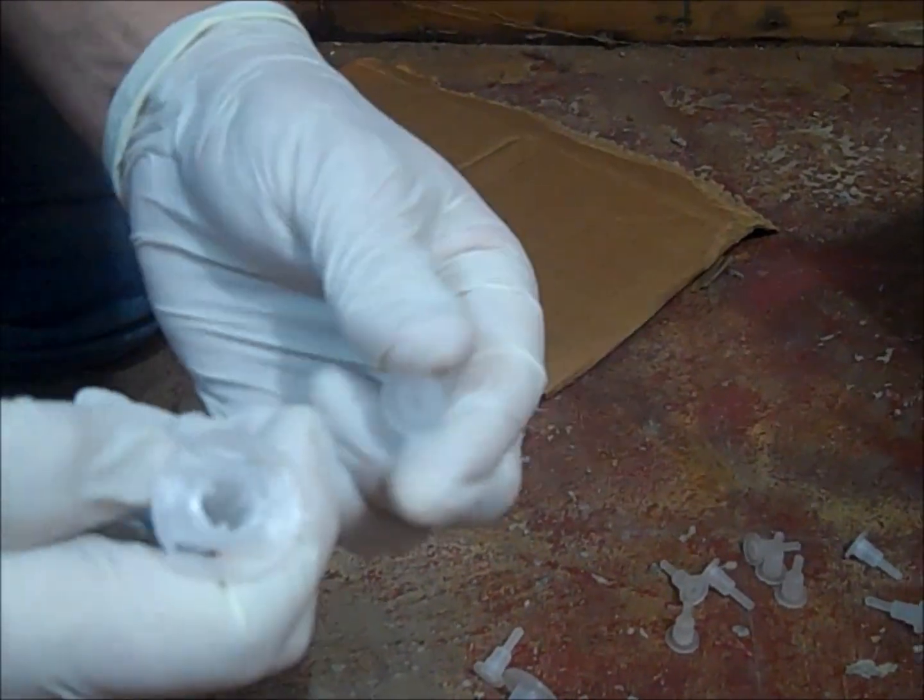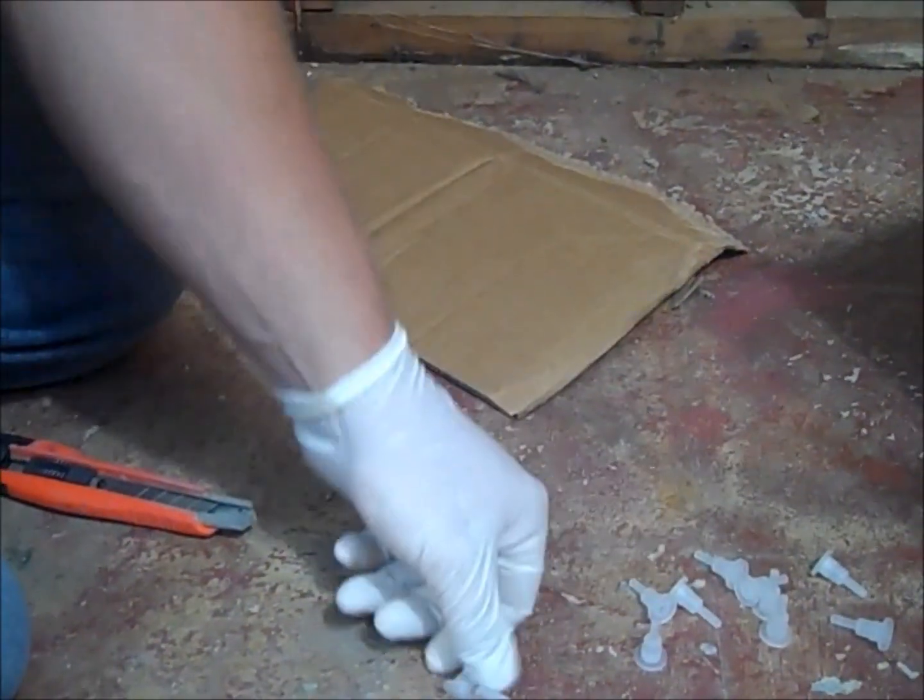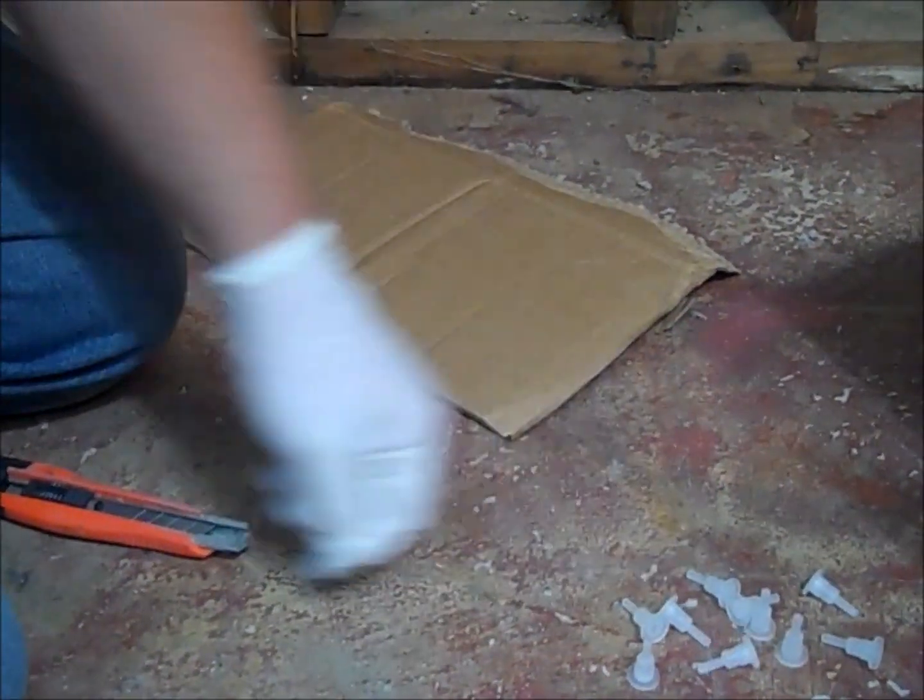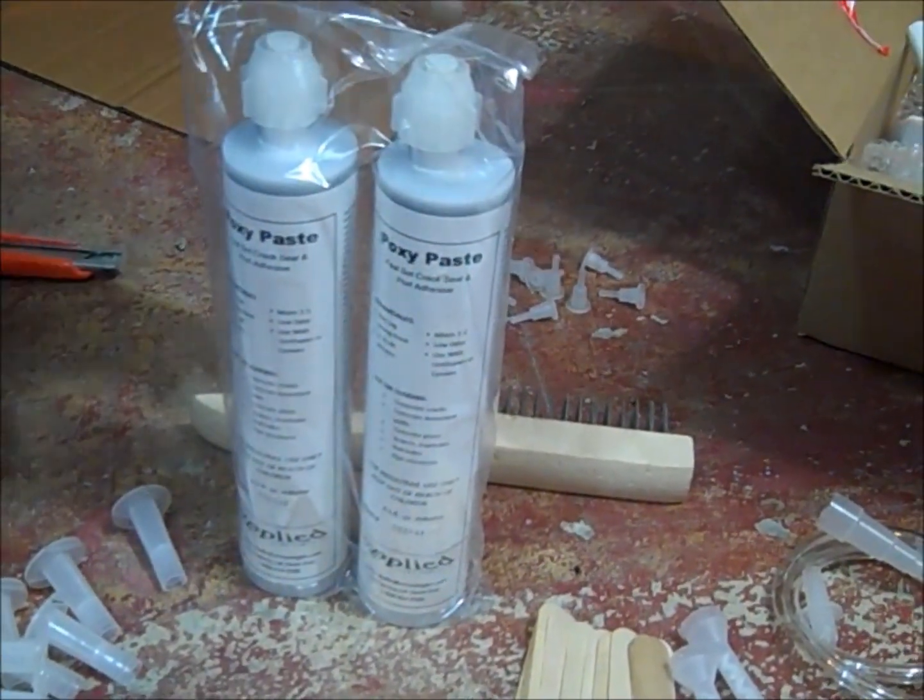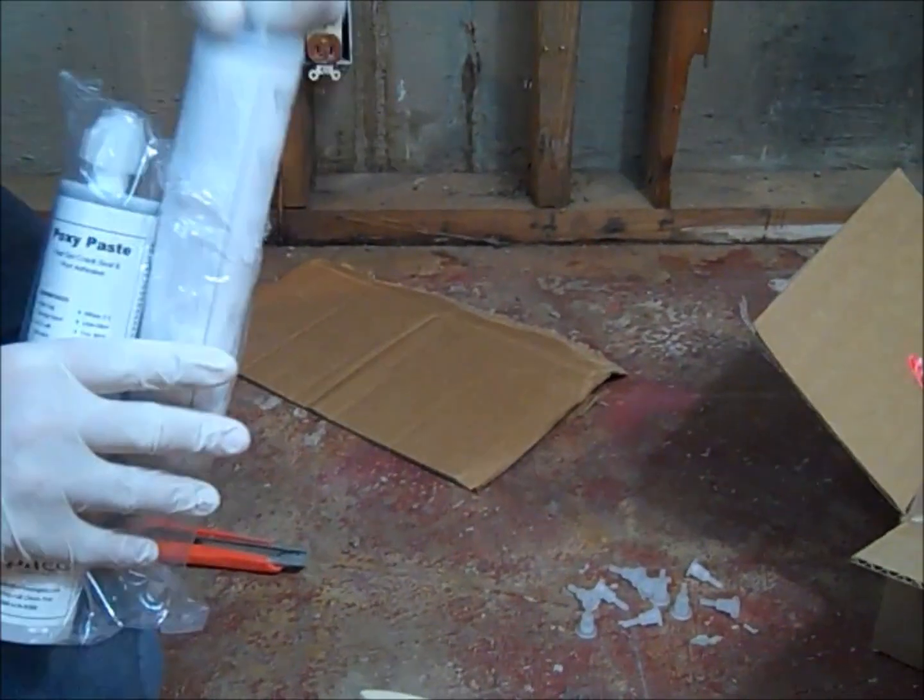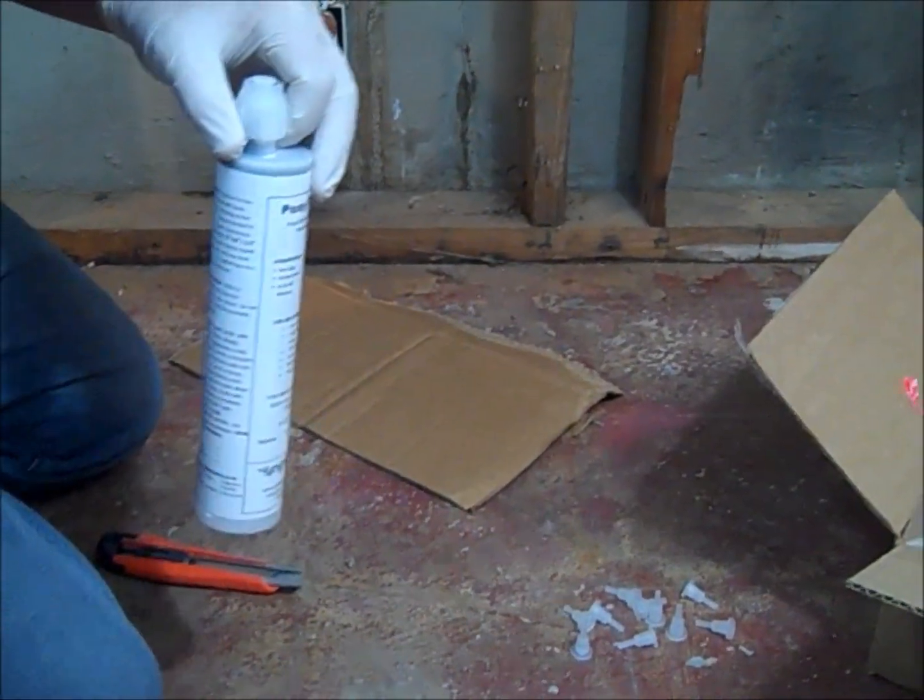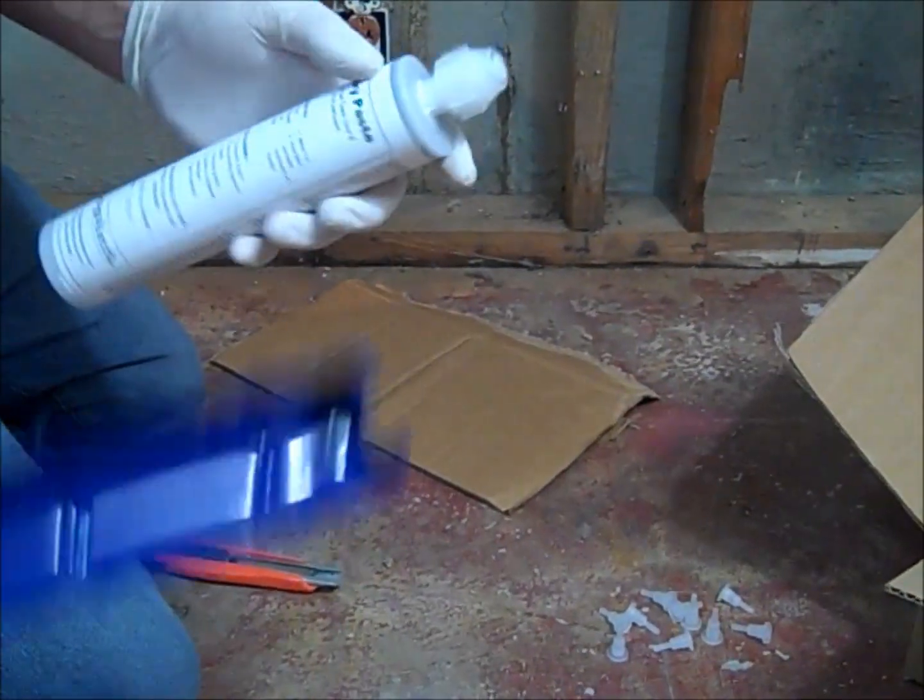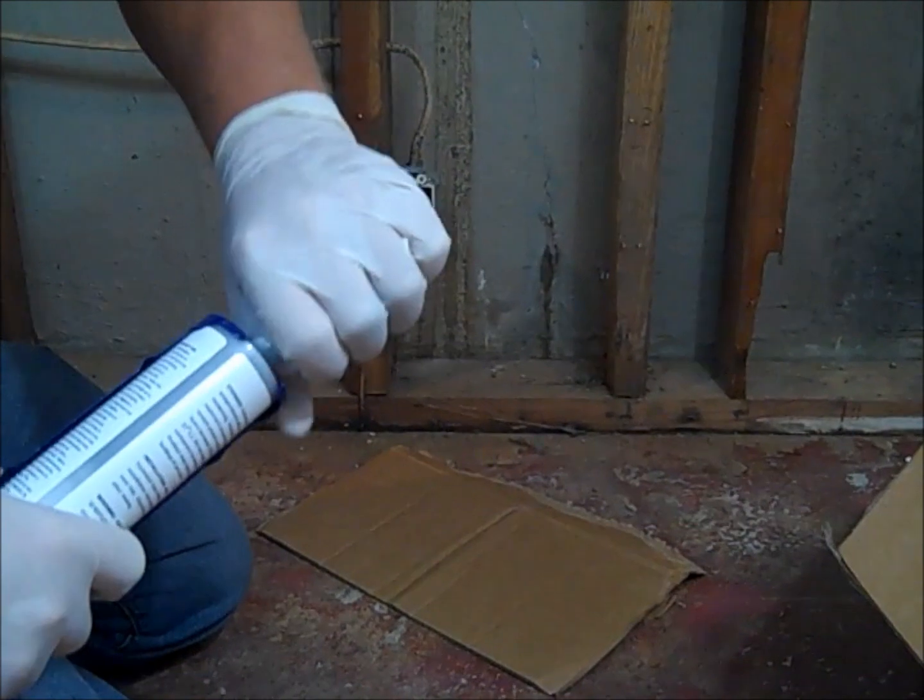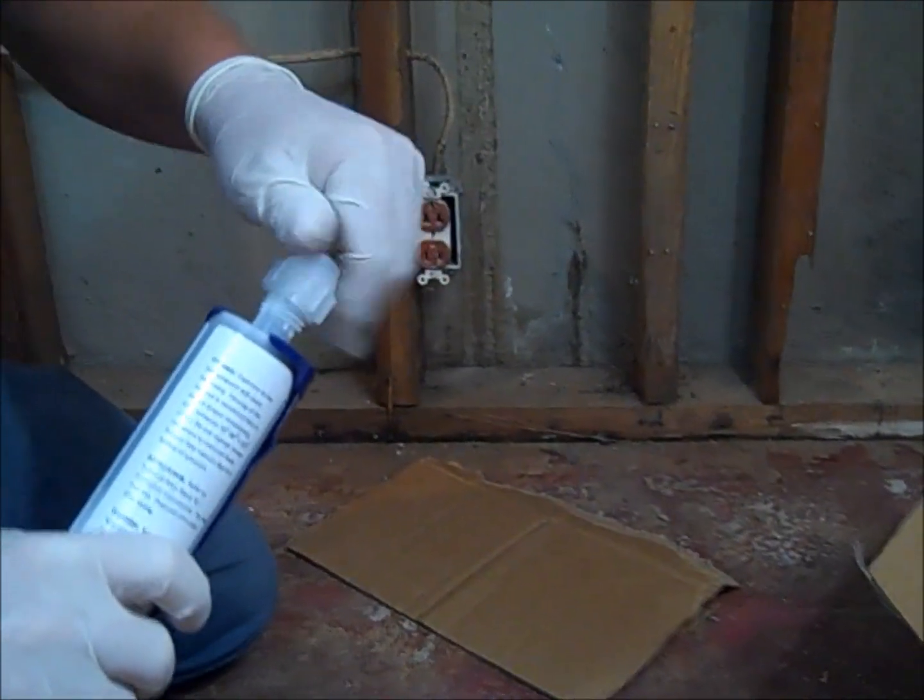Separate the plugs from the injection ports. Do not discard the plugs as they will be used later. Insert the epoxy paste into the caulk gun. Ready the epoxy paste port and crack seal adhesive by unscrewing the cap over the cartridge neck. Extract the plugs from the neck.